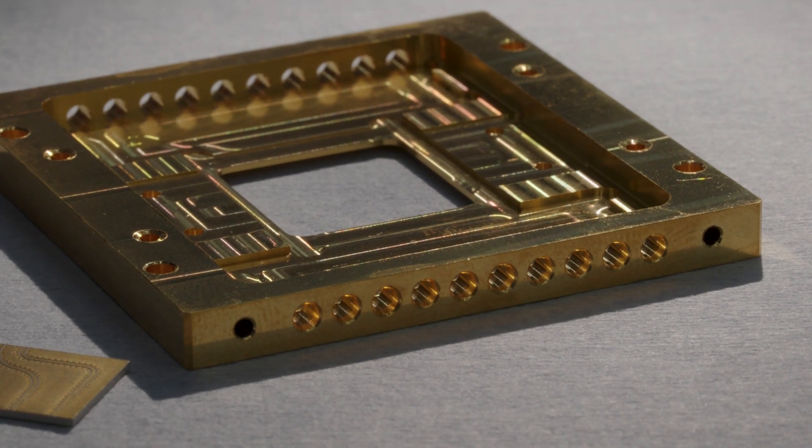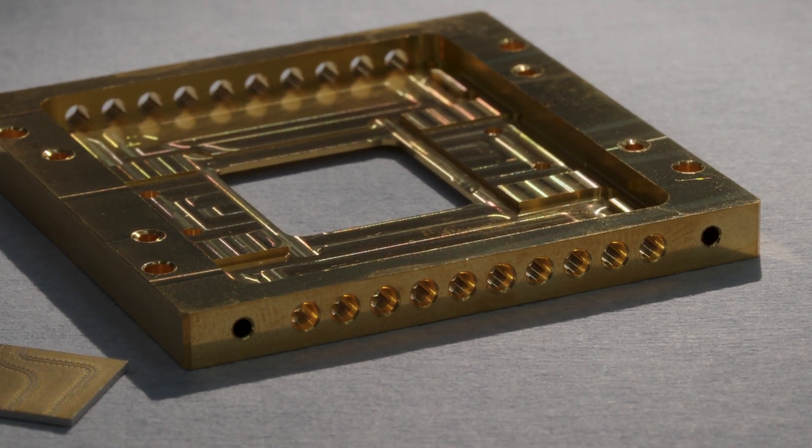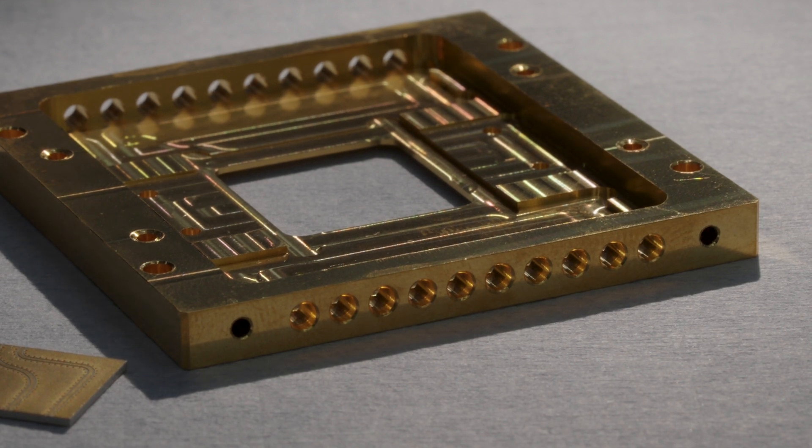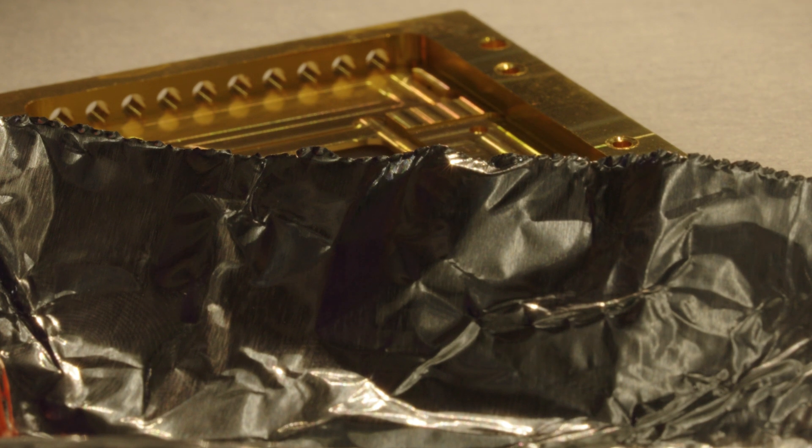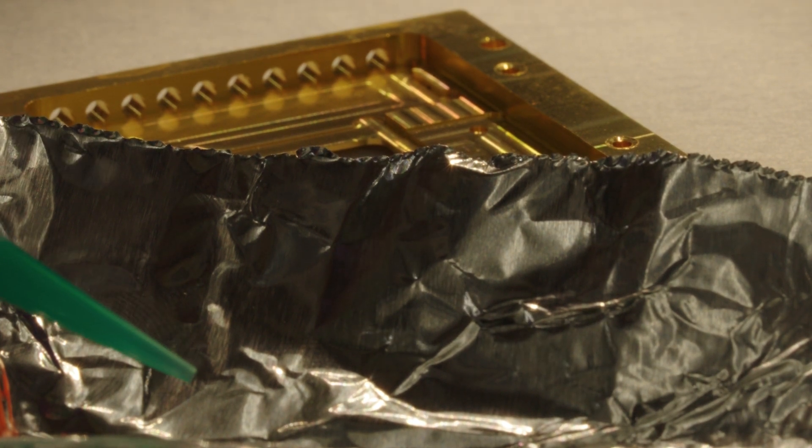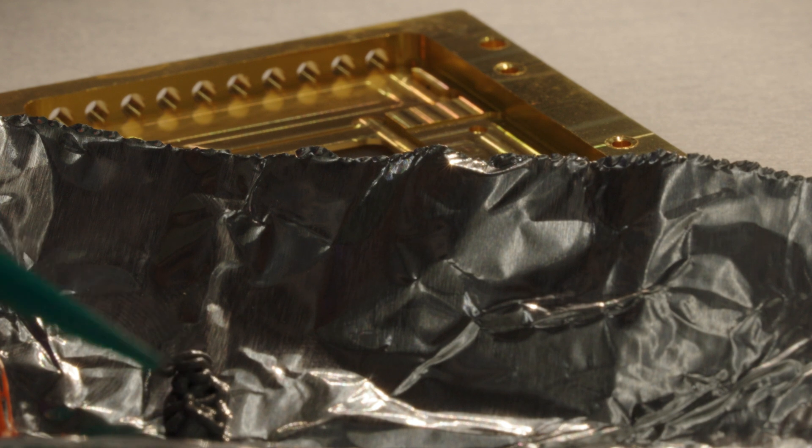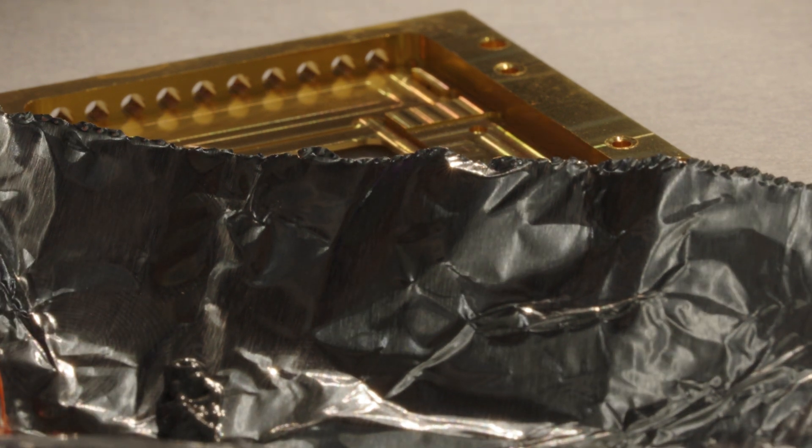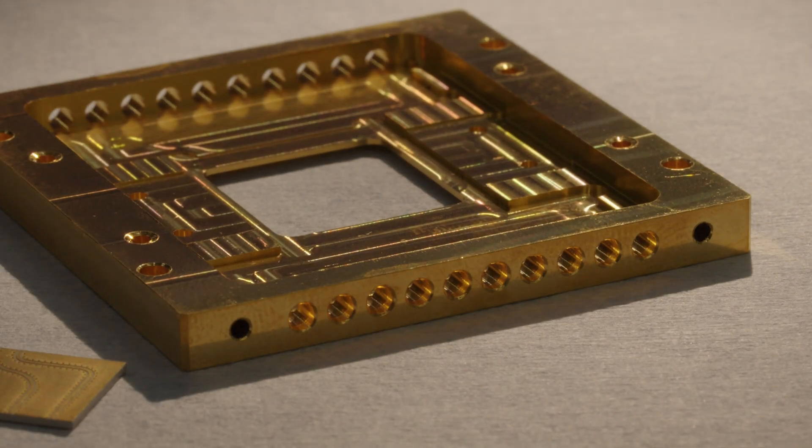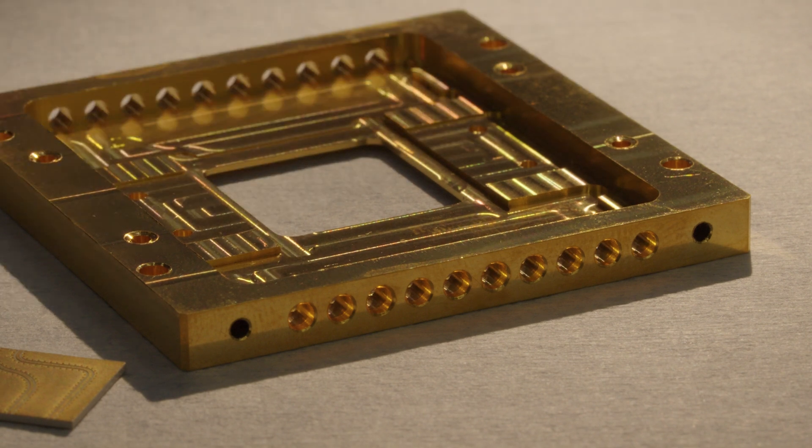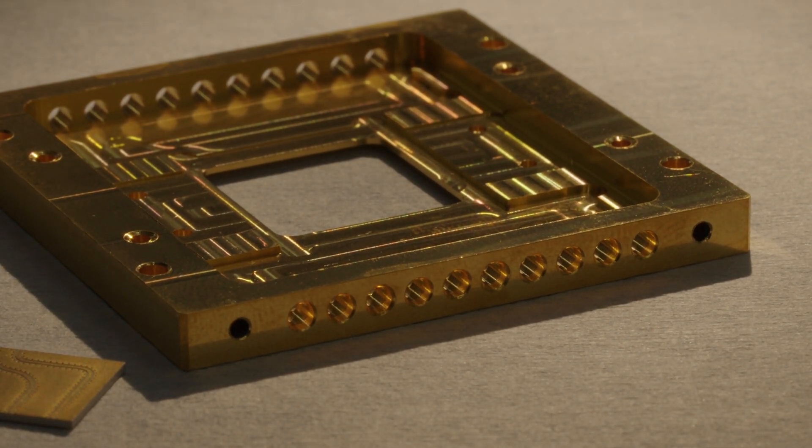So first step is getting the soldering paste out because that's what we're going to use to secure these. So we're putting out the soldering paste right here. I'm going to move this to the back of the shot, but I'll be using it. I'm going to grab some dental tools. These are what we mostly use for applying this kind of stuff.